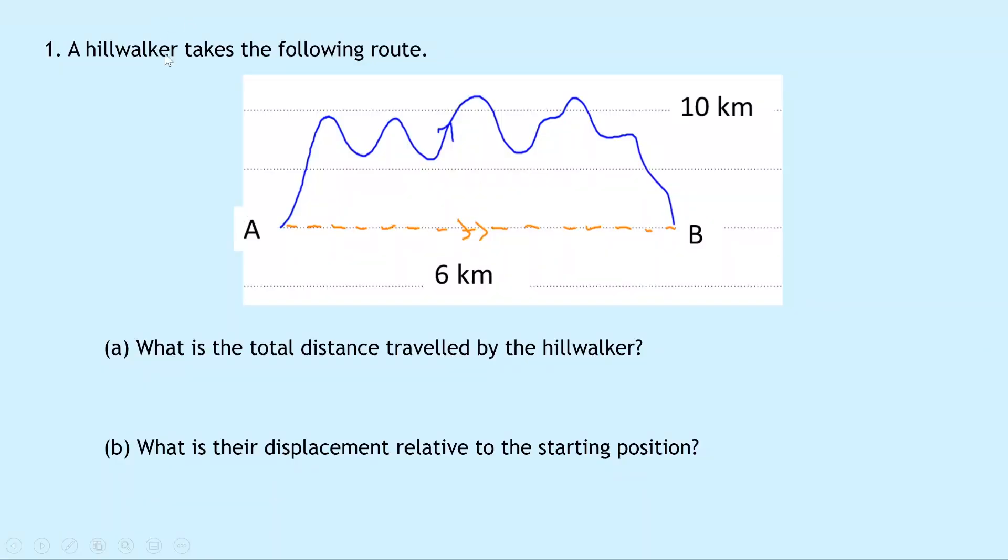So let's get started. Question 1 says a hill walker takes the following route and you'll see that they go from A to B via this blue line here. And it says in part A, what is the total distance travelled by the hill walker? So this distance shown by the wavy line here in blue is 10 kilometres. So we have total distance is 10 kilometres.